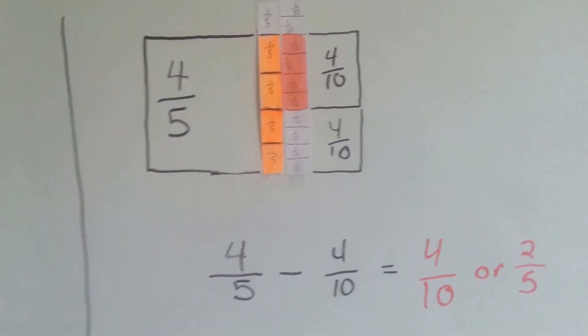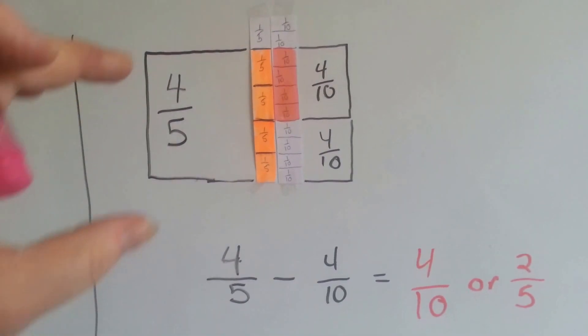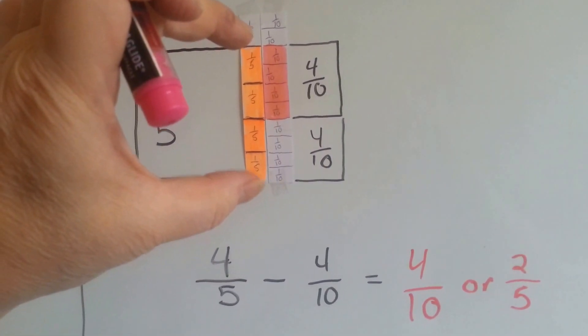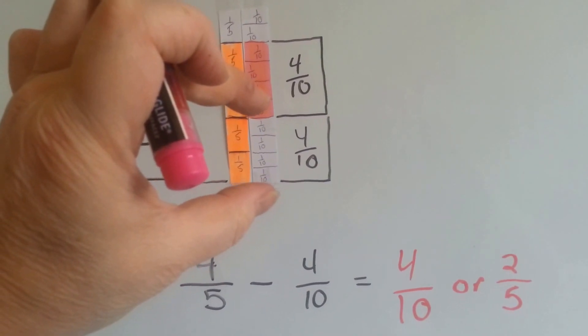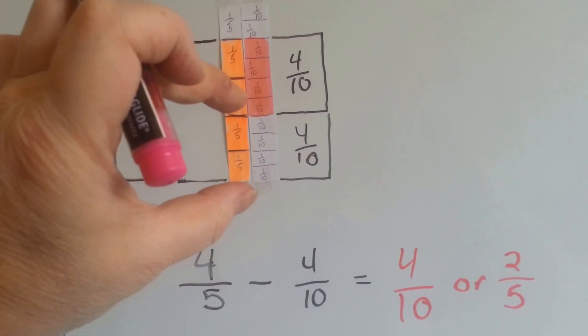In this one, we've got 4 fifths take away 4 tenths. Here's 4 fifths, here's 4 tenths. We can see that there's 4 tenths left over or 2 fifths.